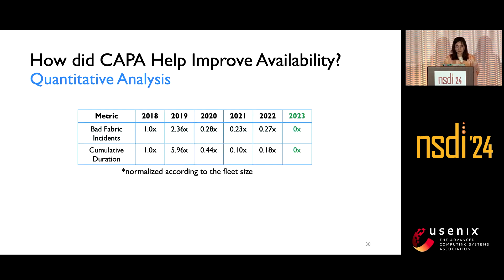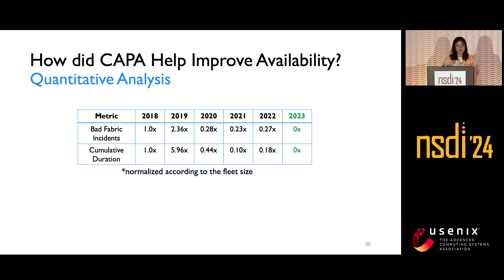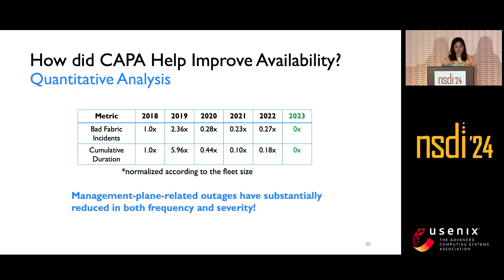We also conducted a quantitative study showing how KAPPA helped availability, by examining the number of incidents over the years and looking at severity through duration changes. Using 2018 as a baseline — before KAPPA was developed — and normalizing for fleet size growth, management-plane-related outages have been substantially reduced in both frequency and severity. Notably, in 2023 there were no major fabric outages in the cluster networks.